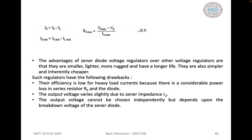The example demonstrates the design process for a loaded voltage reference source using a low-power zener diode; high-power zener diodes are available for higher current applications. Advantages of zener diode voltage regulators over other regulators are that they are smaller, lighter, more rugged, and have a longer life; they are also simpler and inherently cheaper. Drawbacks include: low efficiency for heavy load currents due to power loss in the series resistor RS and the diode; output voltage varies slightly due to zener impedance RZ; and the output voltage depends on the breakdown voltage of the zener diode and cannot be chosen independently.